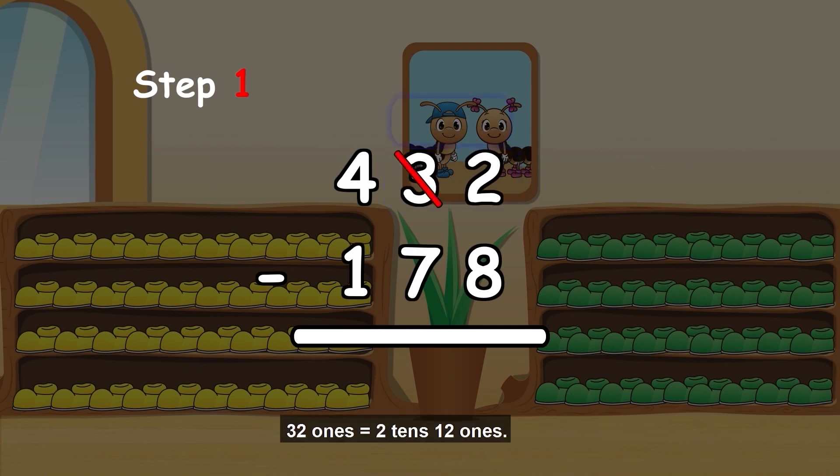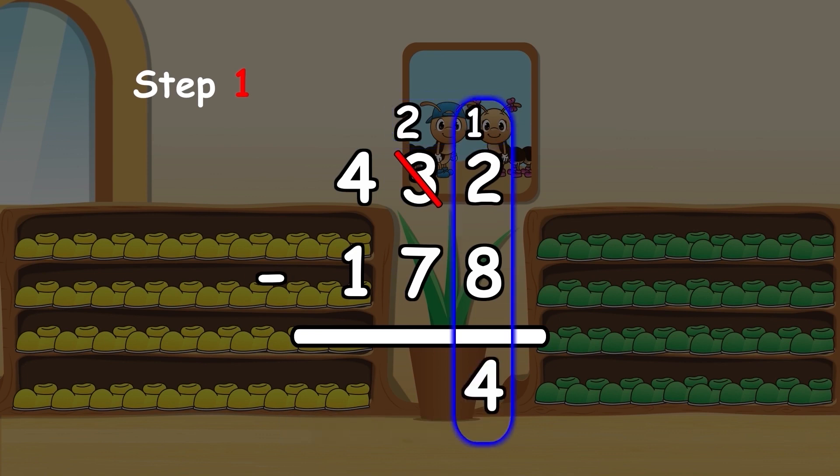32 ones equals 2 tens and 12 ones. 12 minus 8 equals 4.